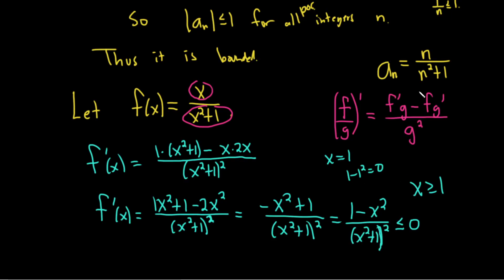Now x is an integer here, right? Remember, this is going to be a sequence. So when x is two, you get that, right? That's less than zero. And the bottom is always positive. So this thing is going to be negative for x bigger than one. So for x bigger than one,